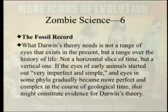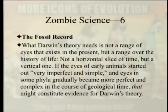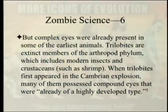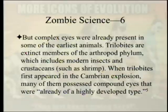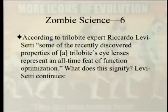What Darwin's theory needs is not a range of eyes existing in the present but a range across the history of life — not a horizontal slice of time, but a vertical one. If the eyes of early animals started very imperfect and became more complex over geological time, that might constitute evidence for Darwin's theory. But complex eyes were already present in some of the earliest animals. Trilobites, which first appeared in the Cambrian explosion, possessed compound eyes of a highly developed type. According to trilobite expert Ricardo Levi-Setti, some properties of trilobite eye lenses represent 'an all-time feat of function optimization.' The best eyes are at the bottom.